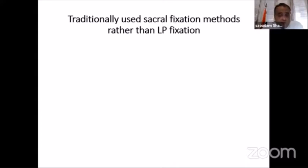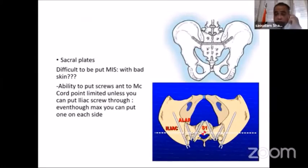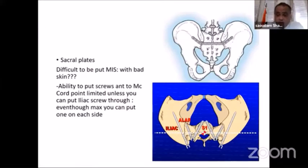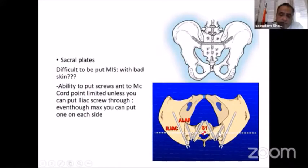Traditionally used methods also include plate fixation. The problem with the plate is not only that it is difficult to apply in a minimally invasive way through damaged skin, but the effective screws — one screw on each side as pelvic iliac screws, or directed as sacral screws passing into the sacral ala and the first sacral segment — are also not easy to place in a minimally invasive manner.